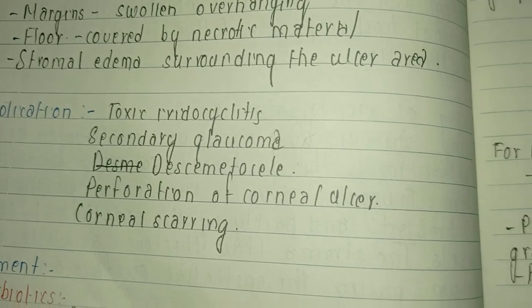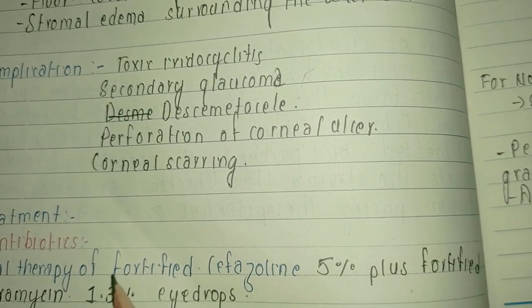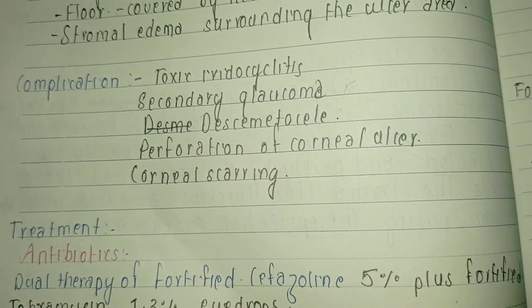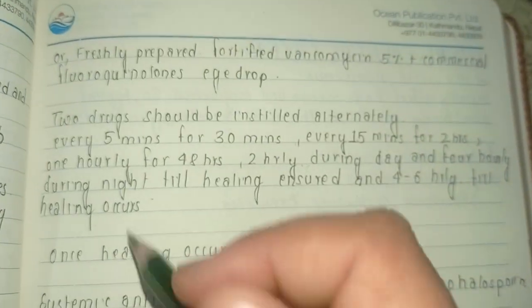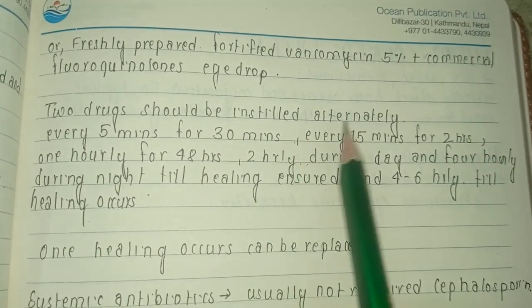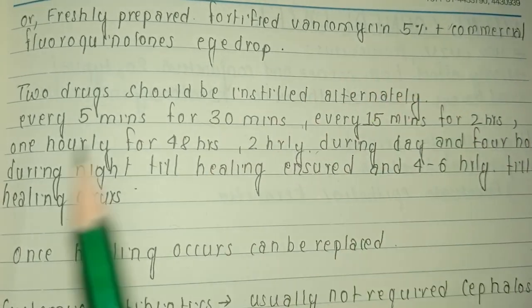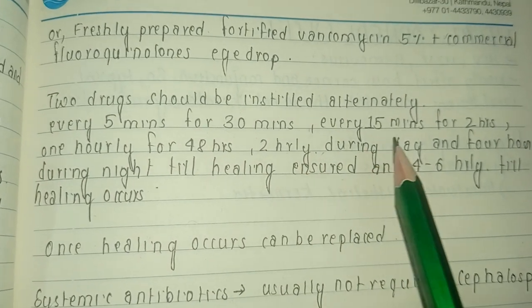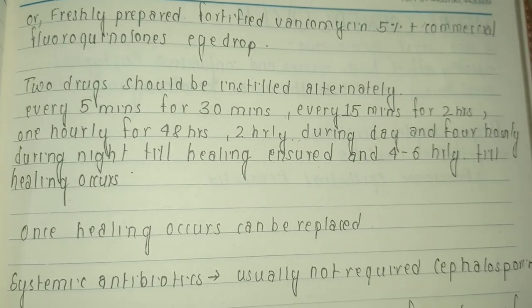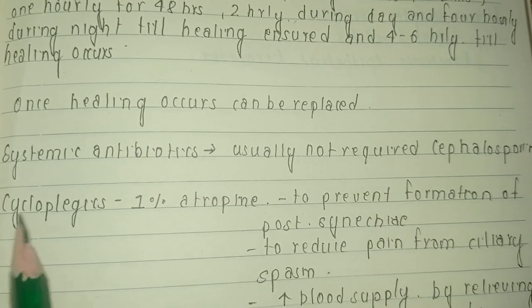For treatment, we use dual therapy: fortified 5% cefazolin and 1.3% tobramycin eye drops — 'fortified' meaning the antibiotic concentration is increased. Alternatively, freshly prepared fortified vancomycin 5% plus commercial fluoroquinolone eye drops can be used. The two drugs should be instilled alternately: every 5 minutes for 30 minutes, then every 15 minutes for 2 hours, then hourly for 48 hours, two-hourly during the day and four-hourly at night until healing is ensured.